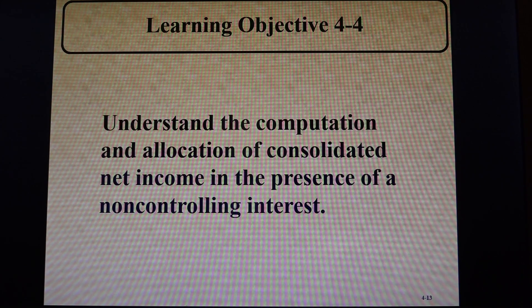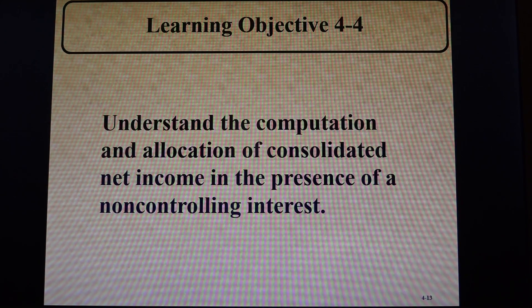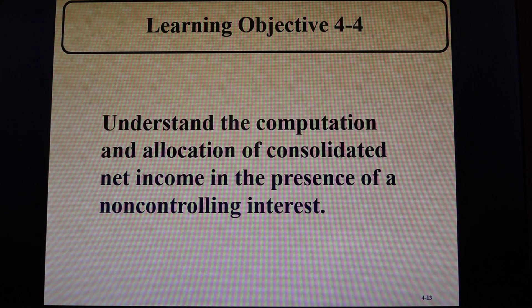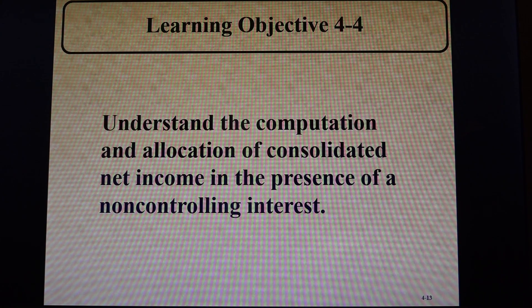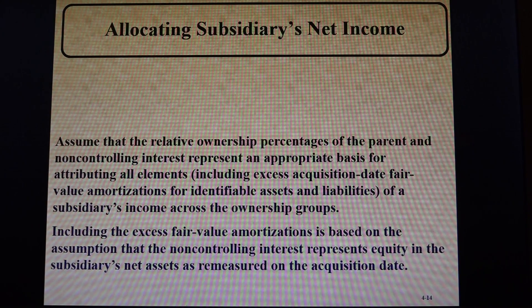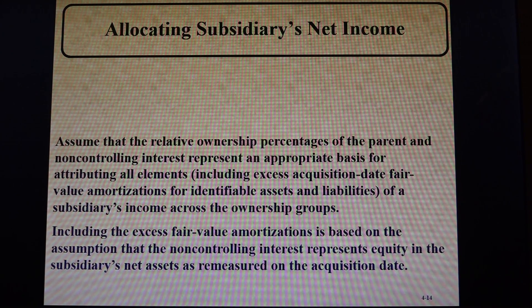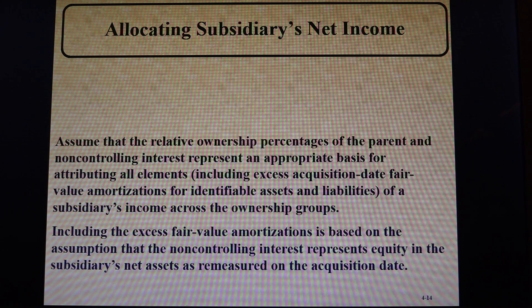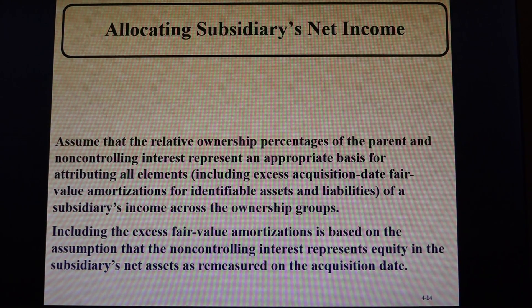The next thing we want to talk about is allocating consolidated net income between the parent and the non-controlling interest. Assume that the relative ownership percentages of the parent and non-controlling interest represent an appropriate basis for attributing all elements of a subsidiary's income across the ownership groups — including the excess fair value amortizations.